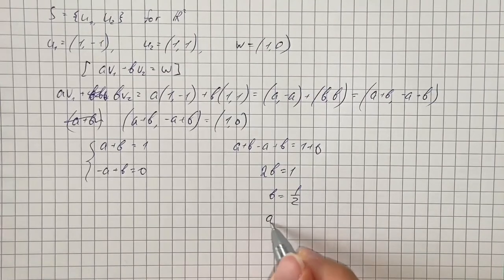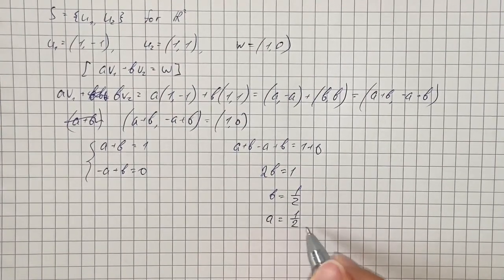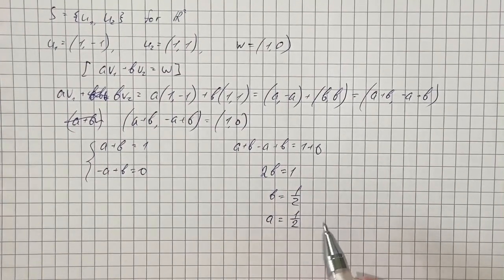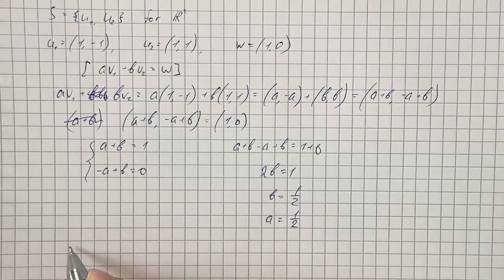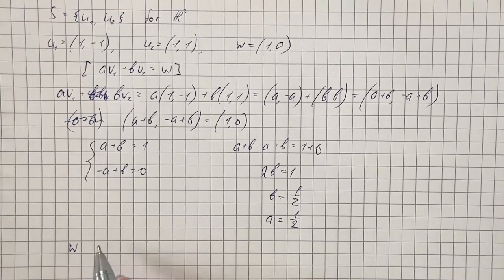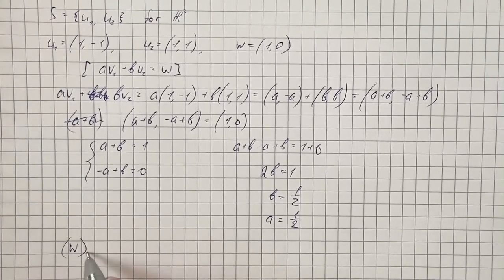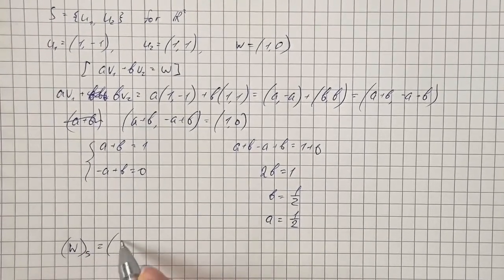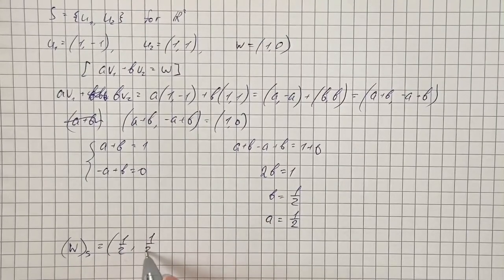And if we substitute this value in the second equation we get that A is also 1 half. Therefore the coordinate vector of W relative to basis S is (1/2, 1/2).